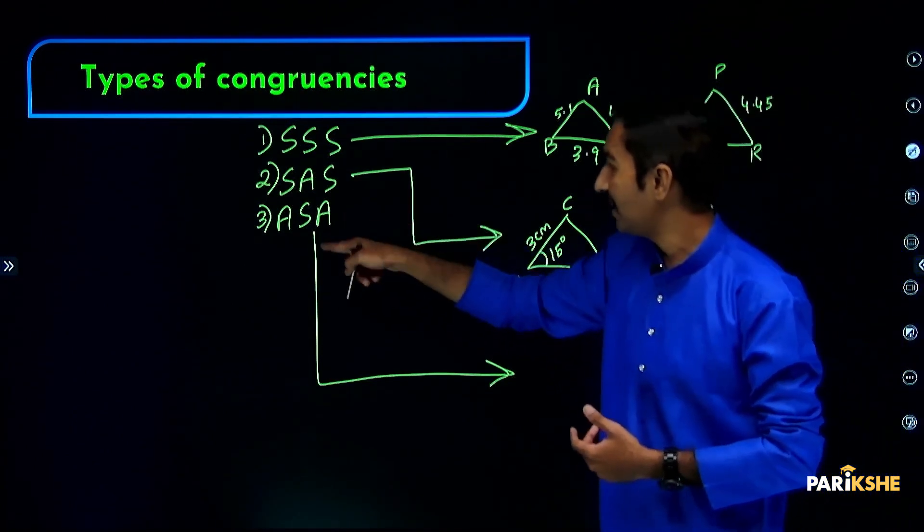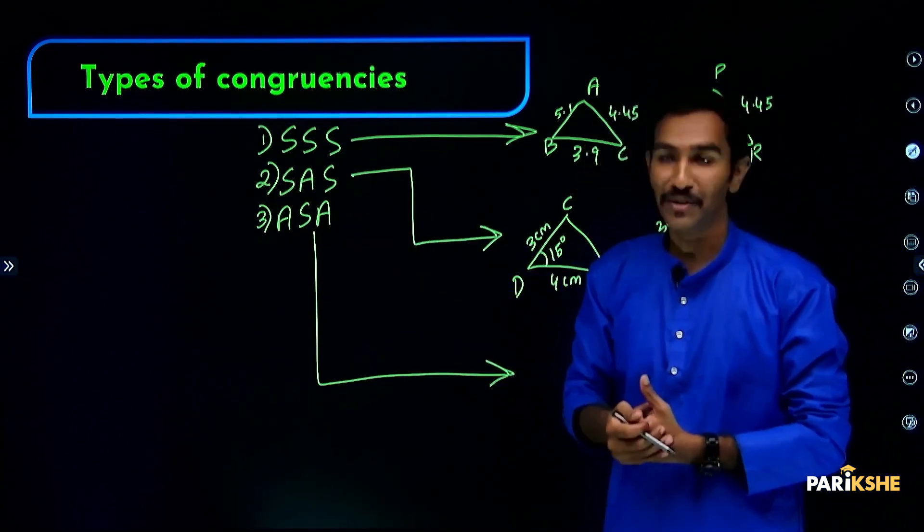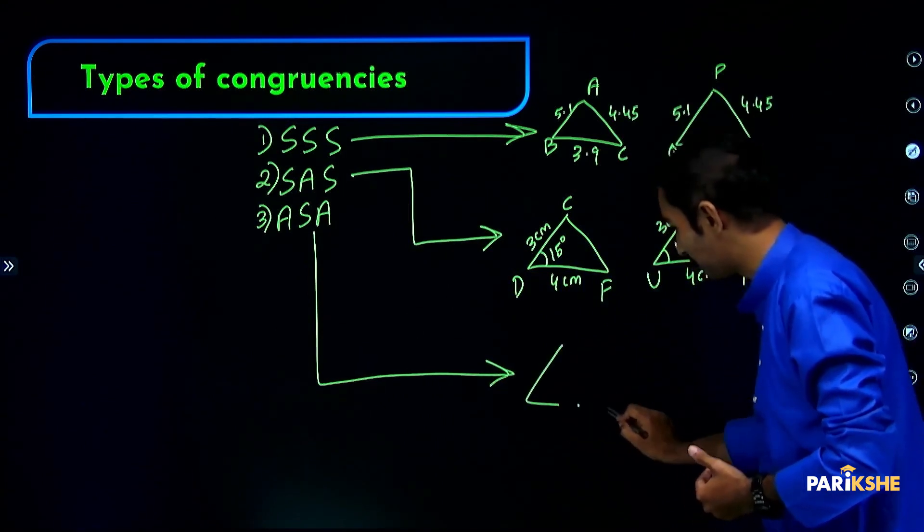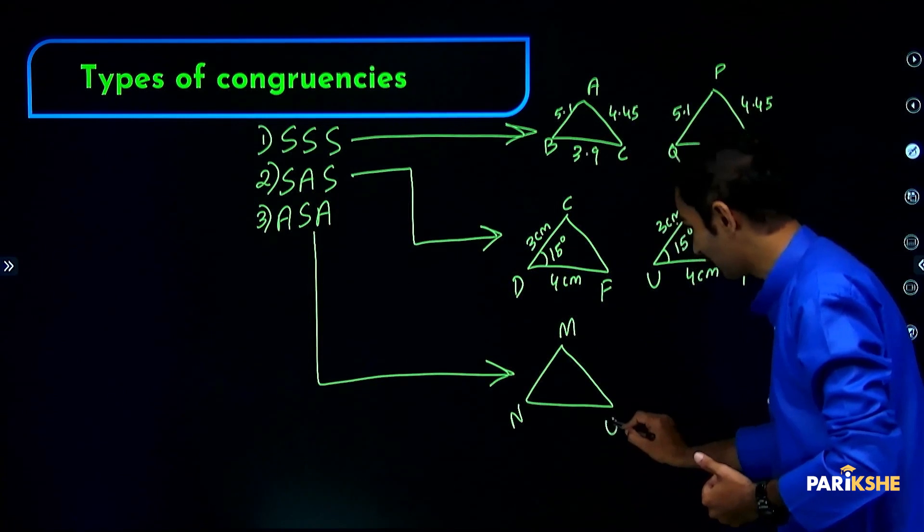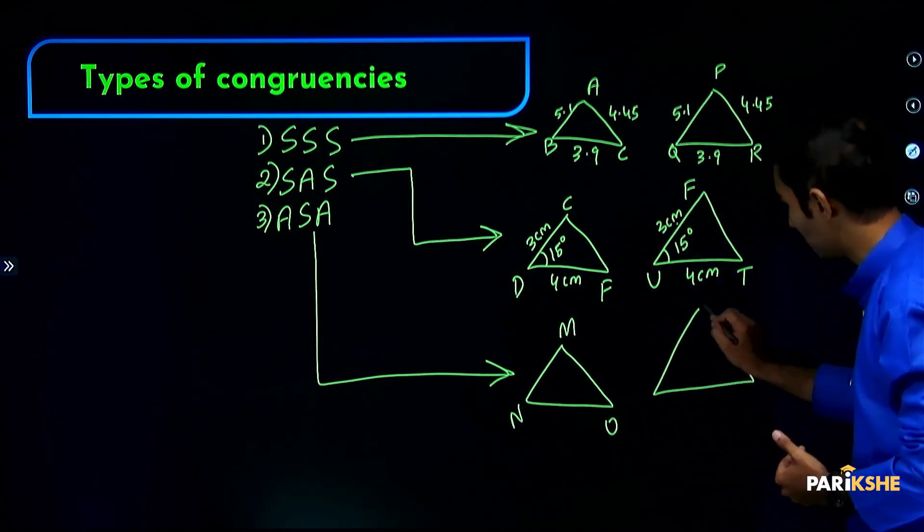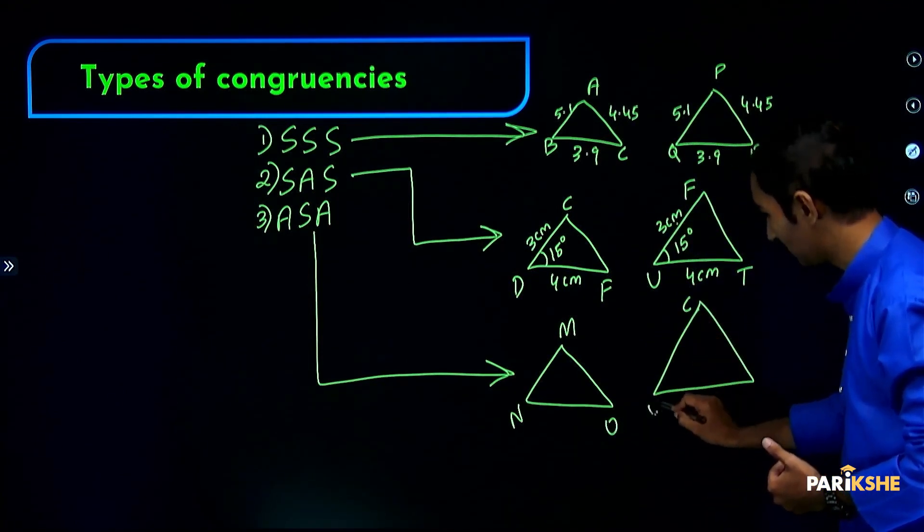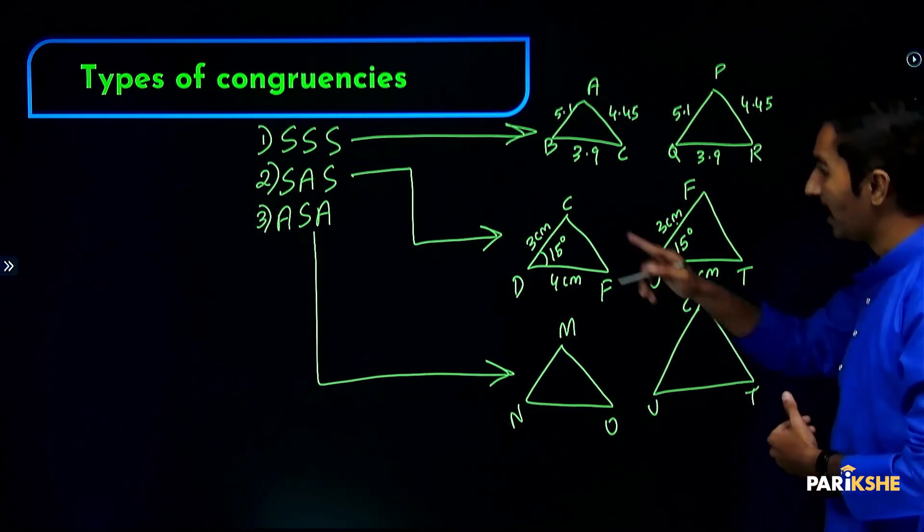ASA means angle-side-angle. This is triangle MNO and triangle CUT.